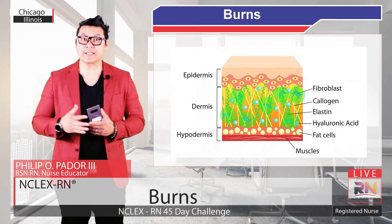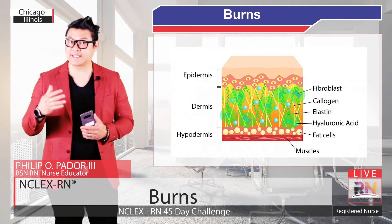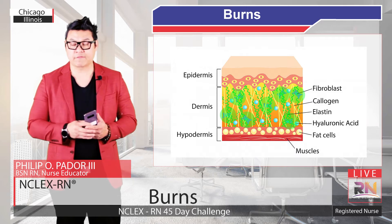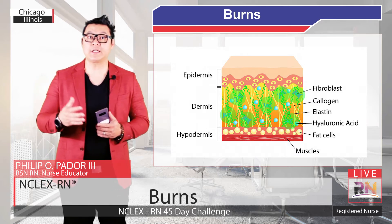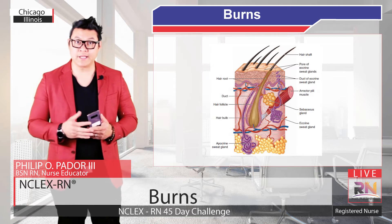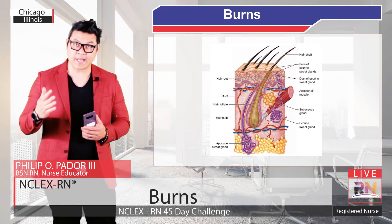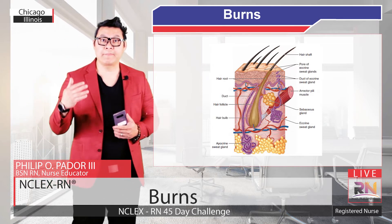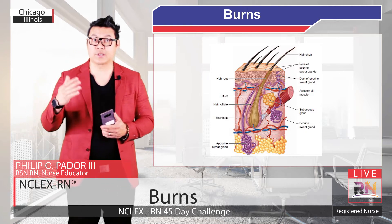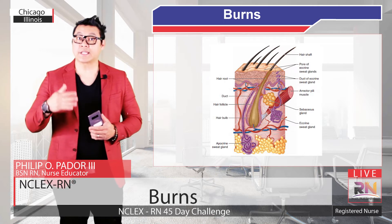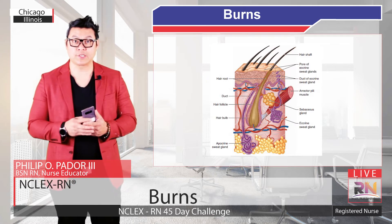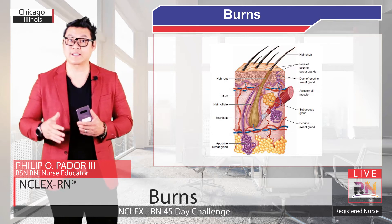Fibroblasts in the reticular layer also create elastin, which is a stretchy protein that gives skin its flexibility. The reticular layer also contains the skin's accessory structures like oil and sweat glands, hair follicles, lymphatic vessels, nerves, and all of the blood vessels that serve the tissues. The type of nerve ending found here detects pressure or vibrations, which allows you to feel someone grabbing your arm.